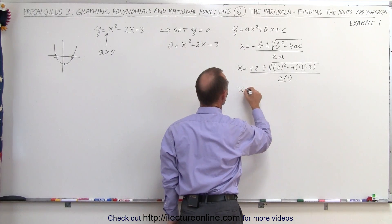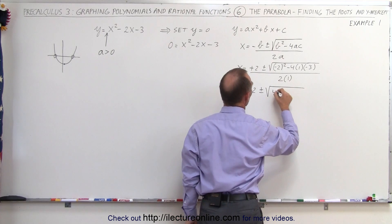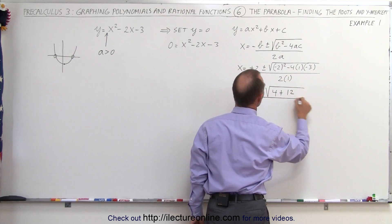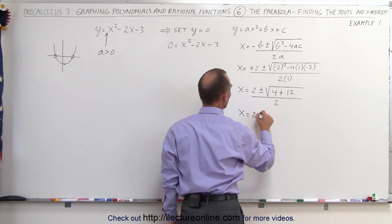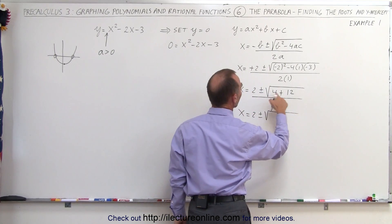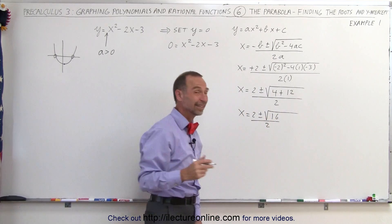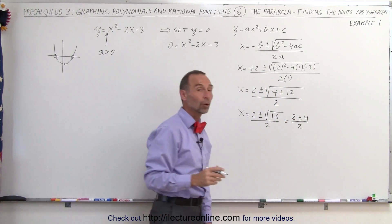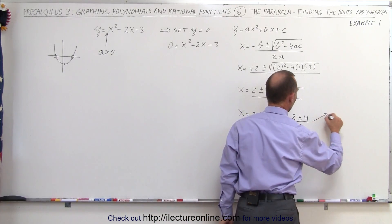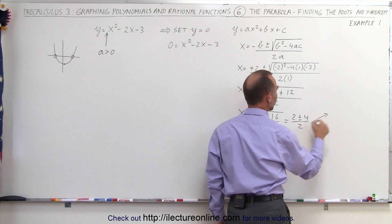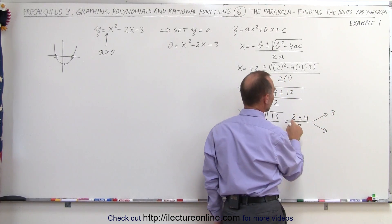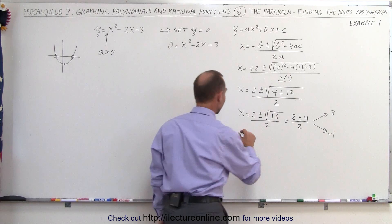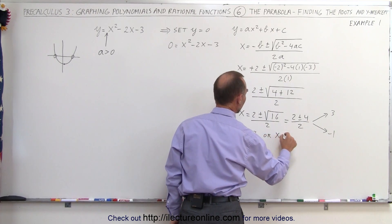Simplifying this, we get x is equal to 2 plus or minus the square root of 4. This minus times this minus is a plus, so that would be plus 4 times 3, which is 12, all divided by 2. Then we have x is equal to 2 plus or minus the square root of 4 plus 12, which is 16, divided by 2. The square root of 16 is 4, so that simplifies to 2 plus or minus 4 divided by 2, giving two solutions: x equals 3, or x equals negative 1.